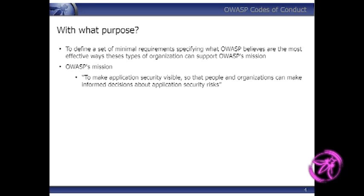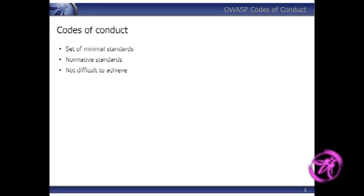So if someone came to us and said, 'We're ISO, we're writing standards — what are the most important things OWASP thinks we should do? You've got a minute or two to define those' — well, that's what these documents are about. OWASP's mission is to make application security visible, so how could all these other organisations contribute to that? We're not saying they're going to do it — they're just aspirational. These are minimal standards, a bit of a baseline. They're not necessarily difficult to achieve, but there's a lot of inertia in organisations, there will be resistance, and people may not think it's important.